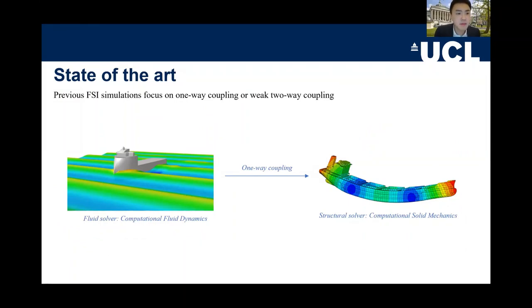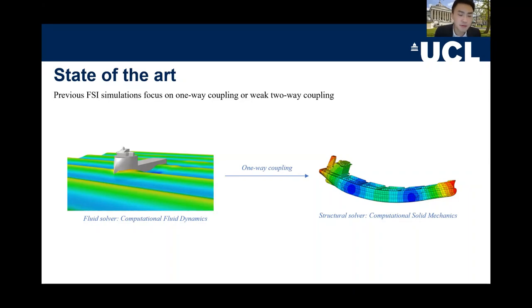Looking at the state of the art, there are a lot of FSI simulations, but most are focused on one-way coupling or weak two-way coupling. For example, on the left-hand side we can see a ship advancing through waves. The fluid solver doesn't solve structural behavior — the structure is assumed as a rigid body. Under the fluid simulation you get the pressure and wave forces on the ship, and then pass them to a structural solver such as FEA to get the deformation based on the force.